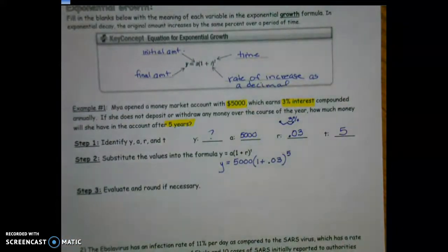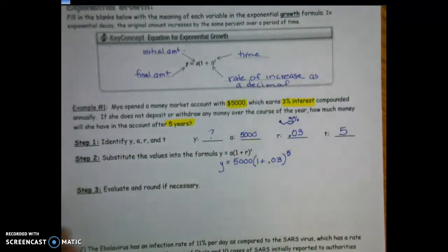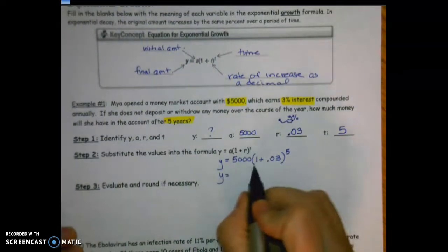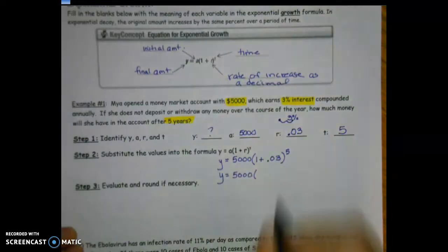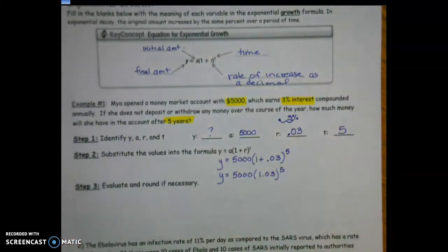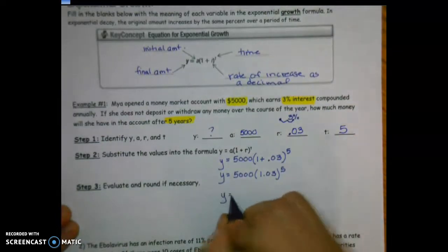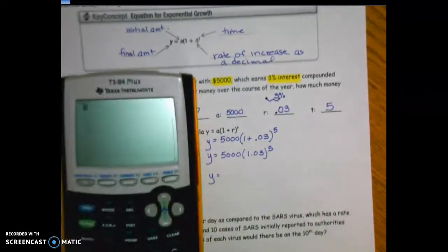From here you have two options. On a multiple choice question, simplify what's in the parentheses first. But if they want a numerical answer, you can plug it straight into your calculator. I'll simplify so you can see: 1 + 0.03 = 1.03, so it becomes 5000 × (1.03)^5. On your graphing calculator or Desmos, type: 5000 × (1.03)^5.